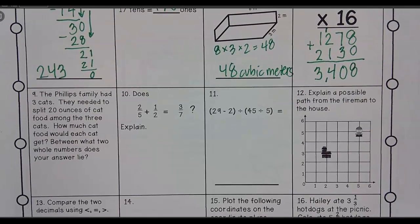The Phillips family had 3 cats. They needed to split 20 ounces of cat food among the 3 cats. How much cat food would each cat get? And then we need to find out between which 2 whole numbers does your answer lie.